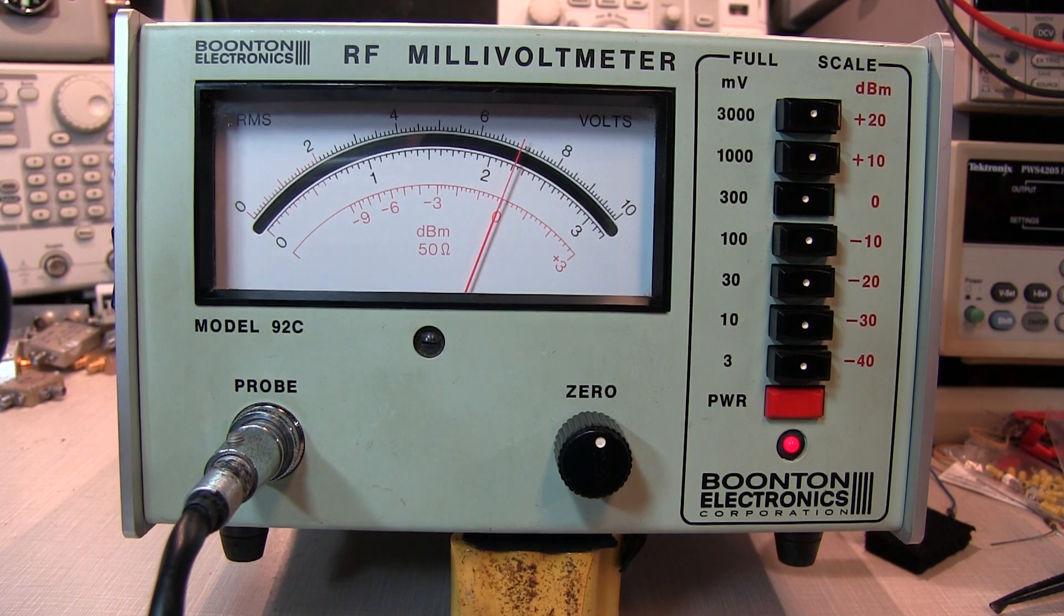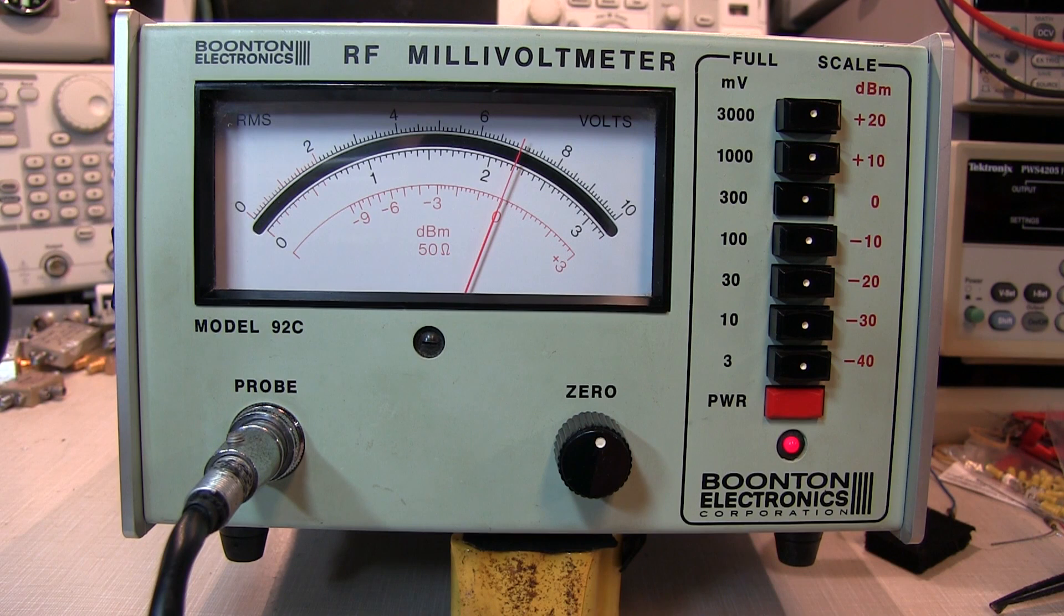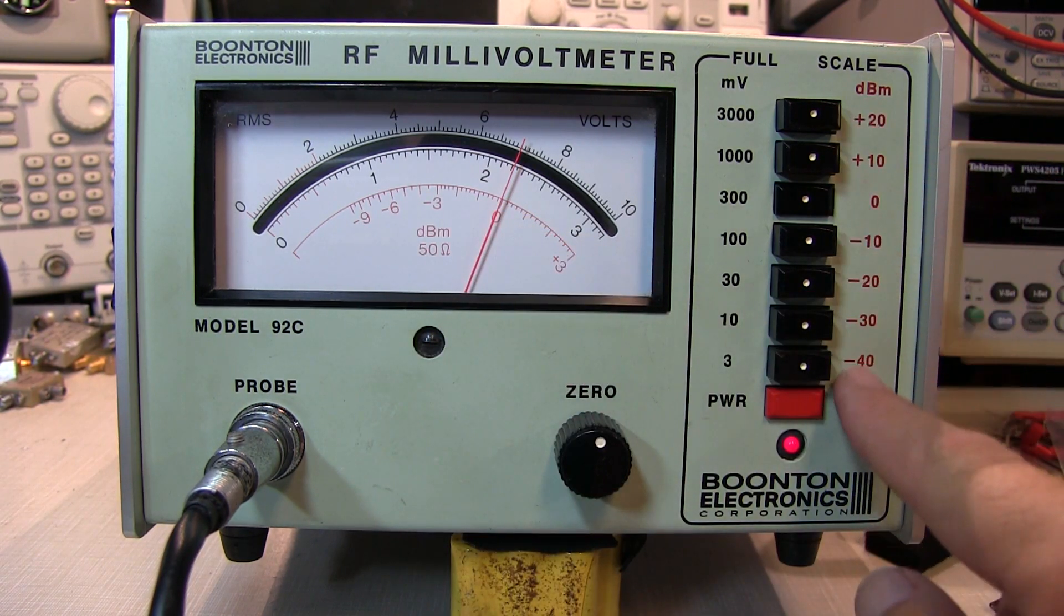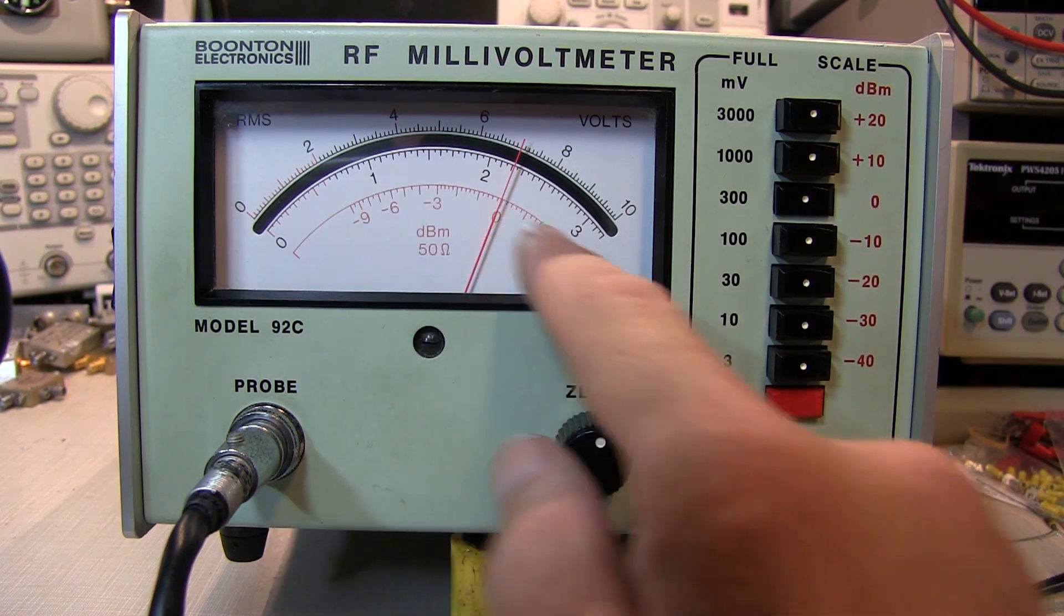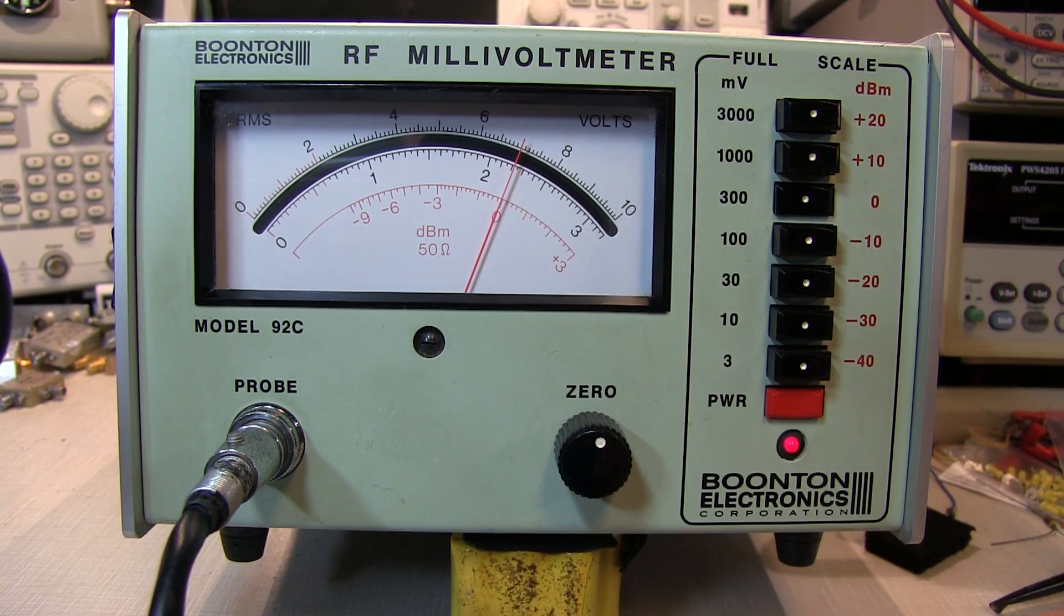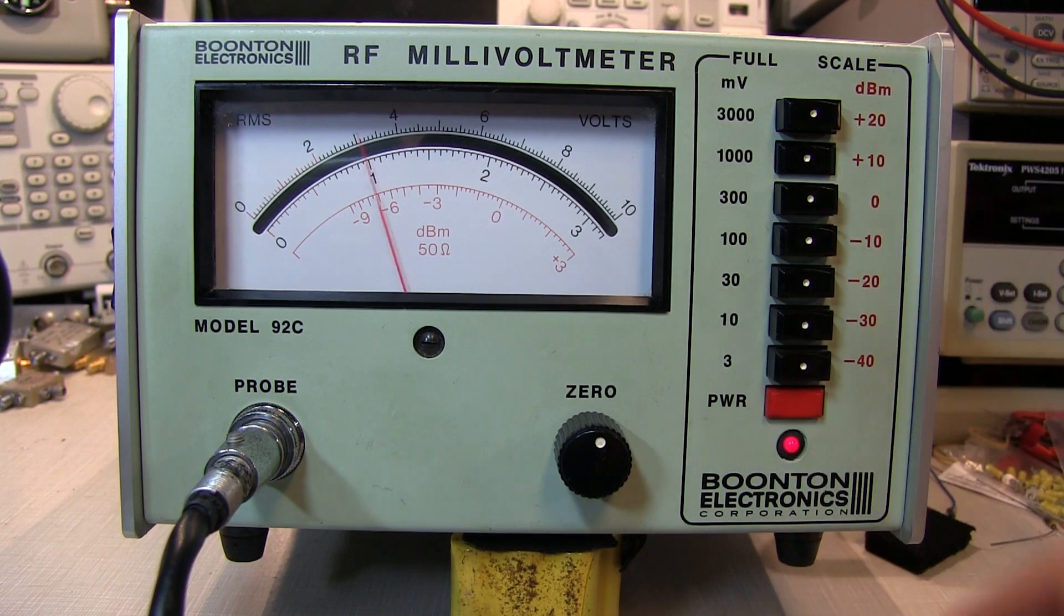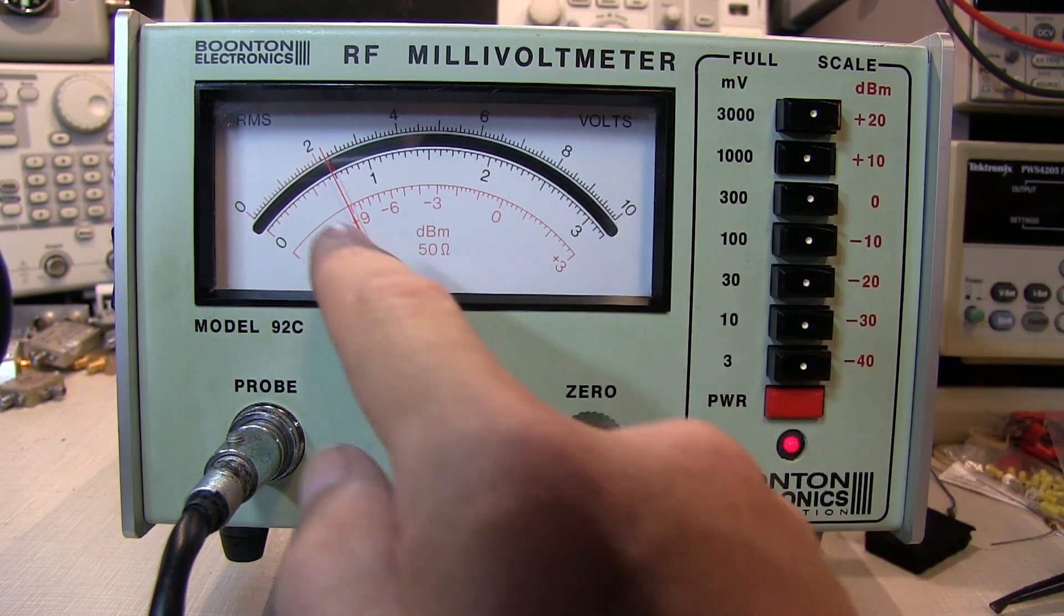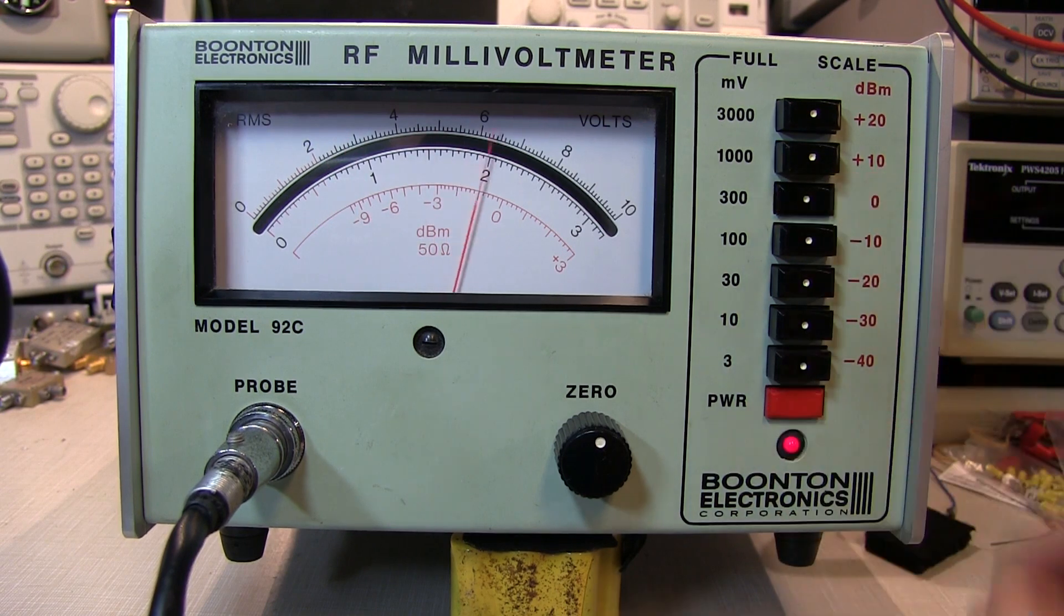And lo and behold, that reads right dead on top of 0 dBm. The way the dBm scale works on here is, depending on what scale you've got, you add or subtract the dBm reading from the setting. So in this case, when it's set to 0 and it reads 0, we have 0 dBm. You'll notice if I set this to plus 10 dBm, and the meter now is going to read down here at minus 10, so I'm going to have plus 10, minus 10, so that's still 0 dBm. So that's how the dBm scales work.